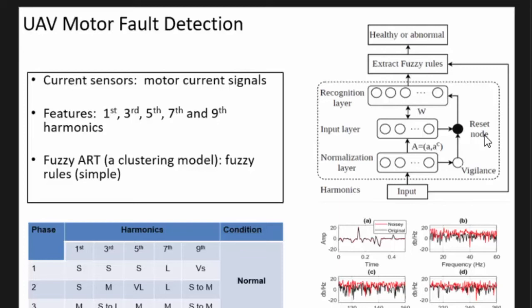For the current sensor, we perform fast Fourier transform and select their harmonics, and then we use unsupervised learning to detect where it goes wrong. Of course we do some damage to our motor to see what will happen.